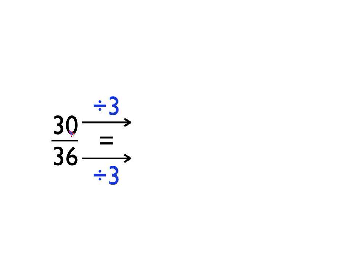Let's have a look at one more example. Thirty thirty-sixths is our starting fraction and we're going to write this in its simplest form. Can we think of a number that's a factor of both thirty and thirty-six, or a number that divides into thirty and thirty-six? Threes go into those. So if we divide thirty by three we get ten, and if we divide thirty-six by three we get twelve. So we've got ten twelfths.